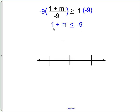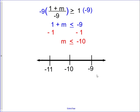Next we undo the addition by subtracting 1 from both sides. That cancels out and the variable is isolated, giving us m is less than or equal to negative 10. On the number line we label negative 11, negative 10, and negative 9. The inequality includes 'or equal to,' so we use a solid dot on negative 10, and shade in the less-than direction.